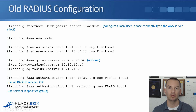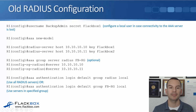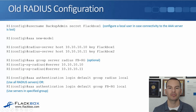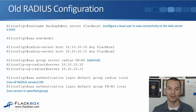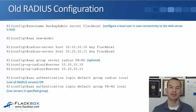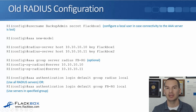Optionally, you can put these servers into a group — you can have different groups of different servers if you want, though it's not that common. To do that, you say 'aaa group server radius' and give it a name; here I've called it FBRG for Flackbox RADIUS Group. Under that, you specify the servers: 10.10.10.10 and 10.10.10.11. Then to enable AAA for authentication, you say 'aaa authentication login default group radius local'. Without specifying a particular group, this means it can use all configured RADIUS servers on that device.